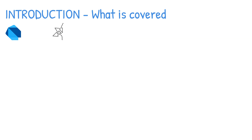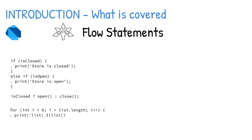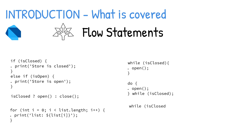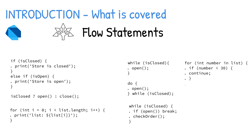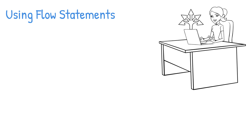In this video we're going to take a look at Dart flow statements: if and else, ternary operator, for loops, while and do-while, break, continue, and switch, to control the logic flow of Dart code. Let's take a look at the following flow statements.